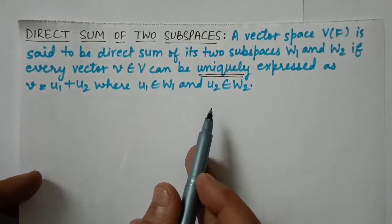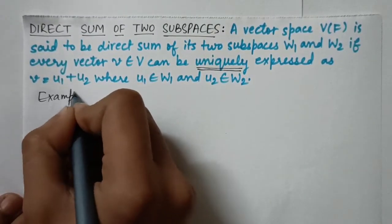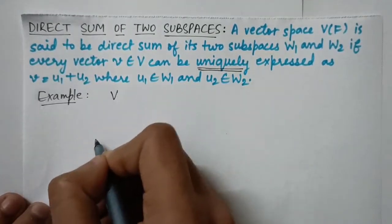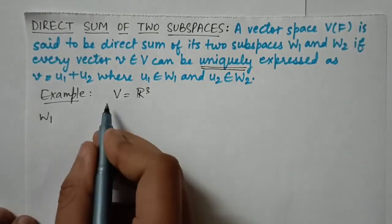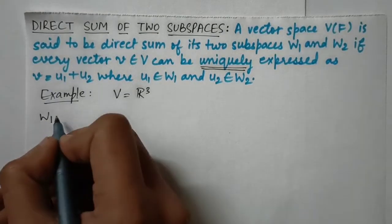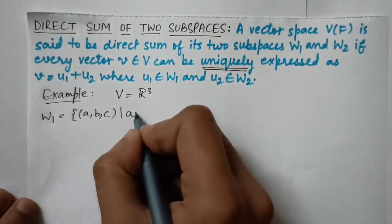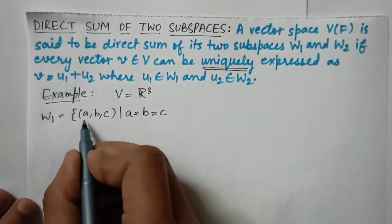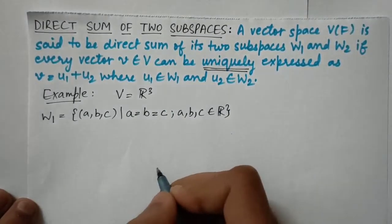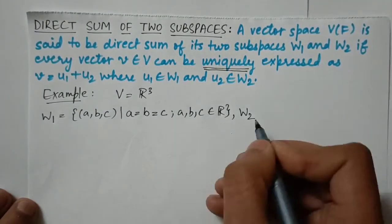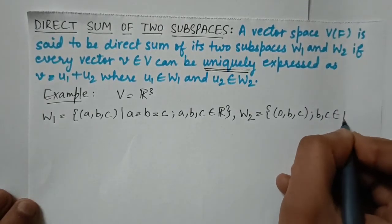To illustrate direct sum, consider another example with V = R3. Let W1 be a subspace containing elements (a, b, c) where a = b = c, and all three numbers are equal to one another, with a, b, c real numbers. Let W2 remain the same: elements (0, b, c) where b and c are real numbers.